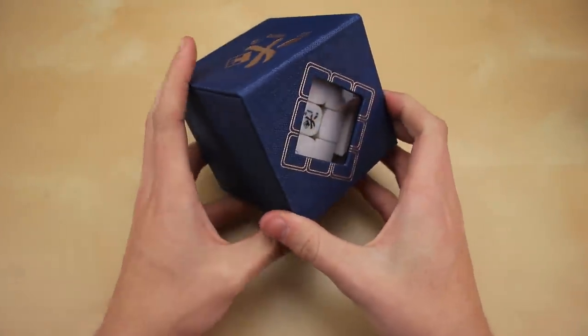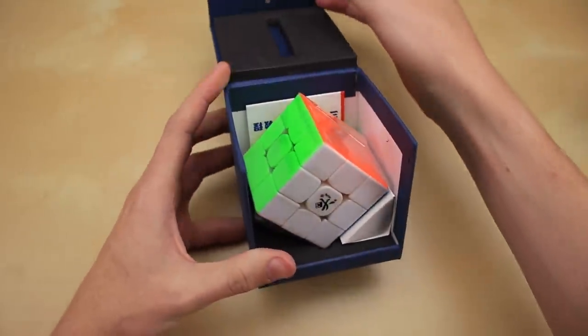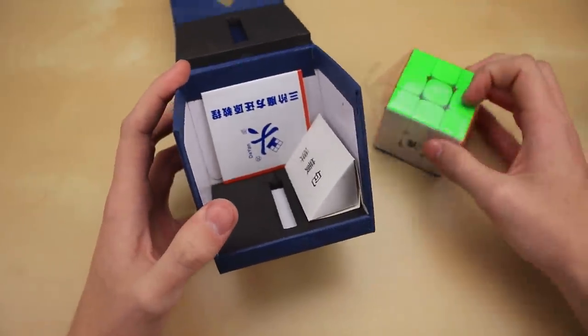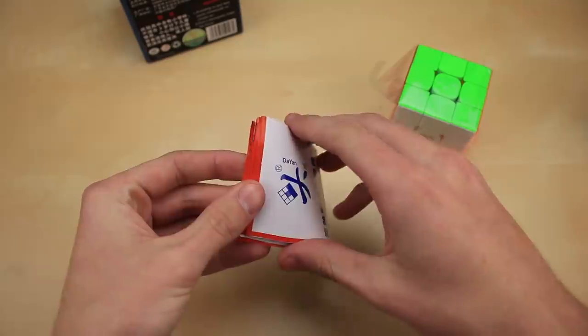It looks like we have nice magnetic packaging here. I'm really excited to get into this cube because Dian, of course, has not been relevant as a speed cubing company for a long time. So in the back here, it looks like we have a little pamphlet. Let's open this up.